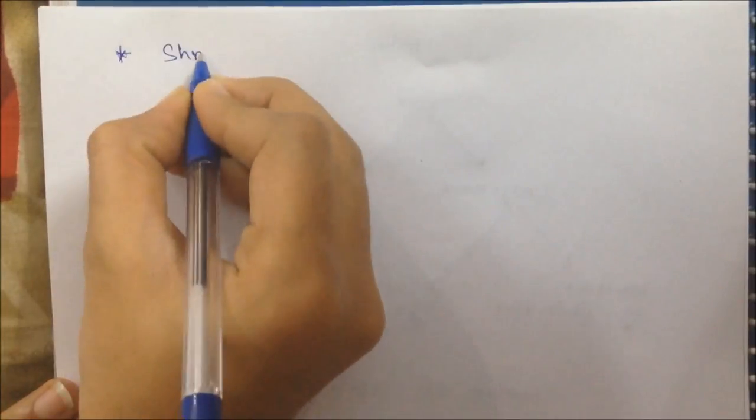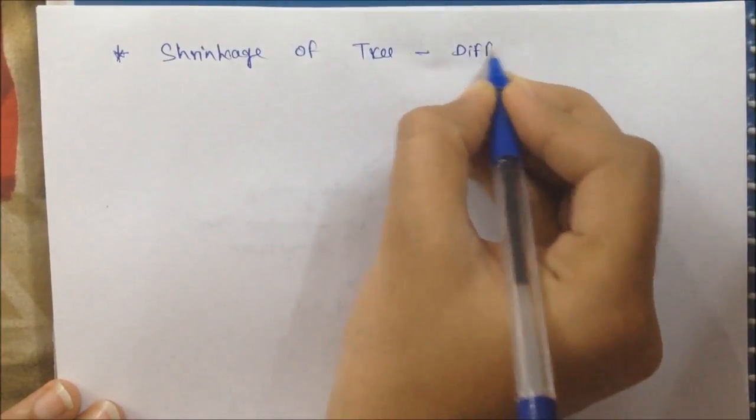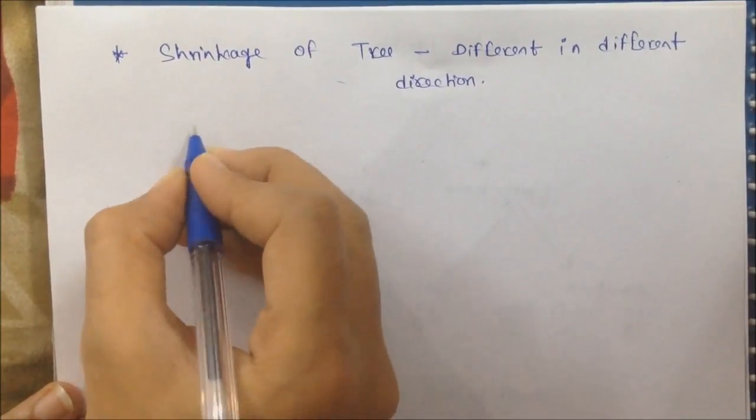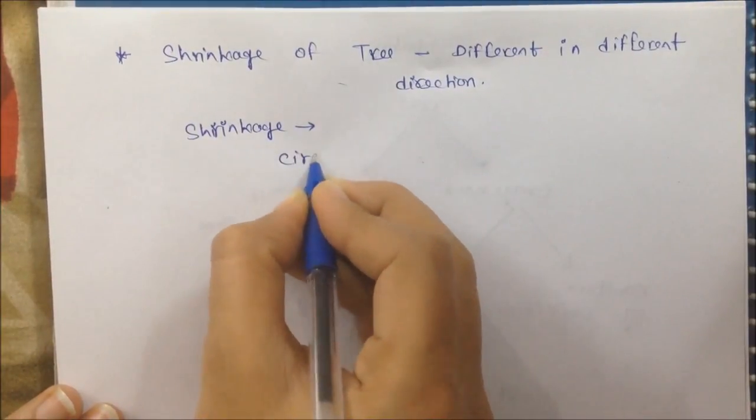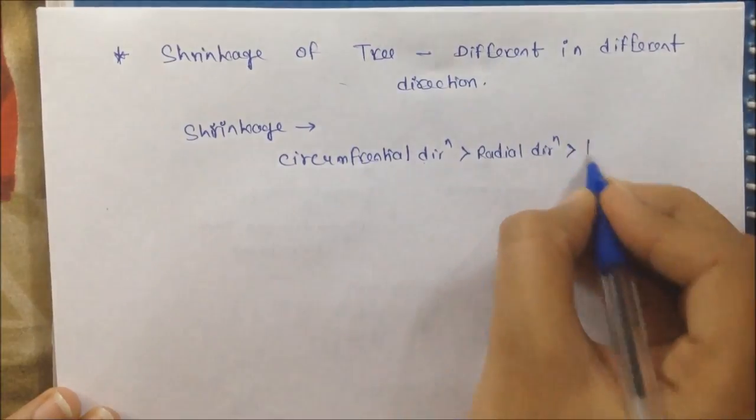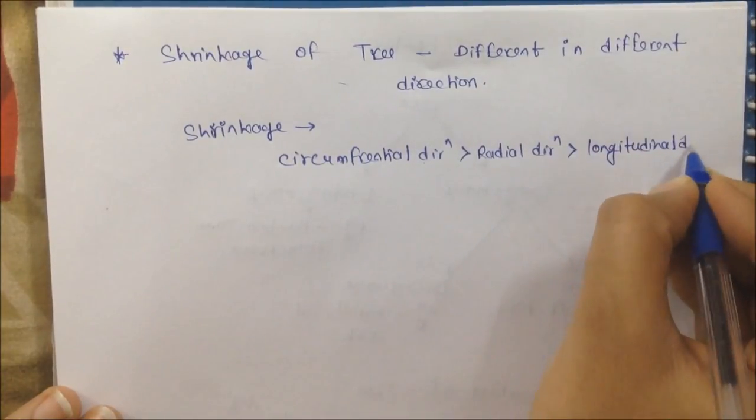The first and very important property of timber is shrinkage. When we dry the timber the water is evaporated and the timber is shrinked. The circumferential direction has the most shrinkage, followed by radial direction, and least shrinkage in the longitudinal direction.